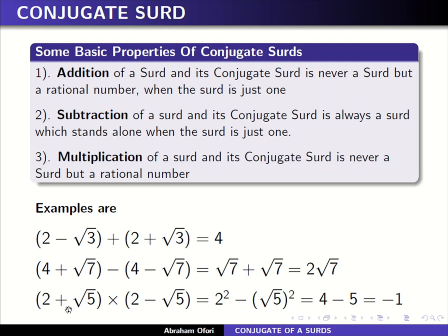For multiplication: when I multiply a surd and its conjugate, we use the difference of two squares. From difference of two squares, we take the first term squared minus the second term squared. For example, if the first term is two and the second is square root of five — the two expressions have the same terms with only the sign changing between plus and minus — you can apply the difference of two squares method.